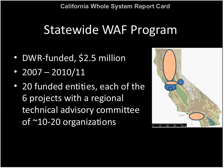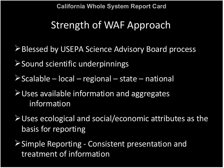This framework became the basis for a grant program funded by the Department of Water Resources using bond funds. There were six projects throughout the state. About $2.5 million was spent over what was originally intended to be a 2.5-year period, now about 3.5 years because of the freeze last year. There were 20 funded entities throughout the state. Each project had a regional technical advisory committee with anywhere from 10 to 20 organizations — about 150 organizations throughout the state invested in this process. I worked with the Sac River Watershed Program project, the Napa County North Bay project, and the Southern California project led by LA San Gabriel River Watershed Council.